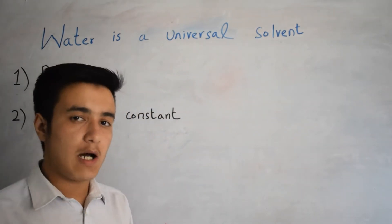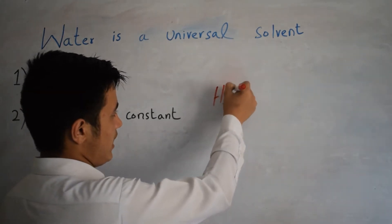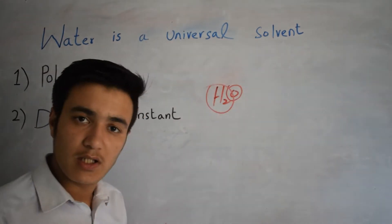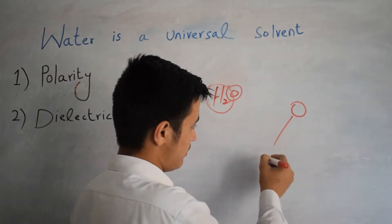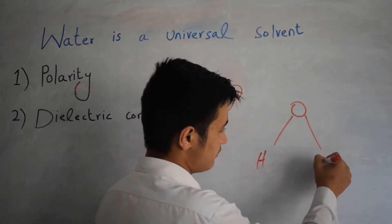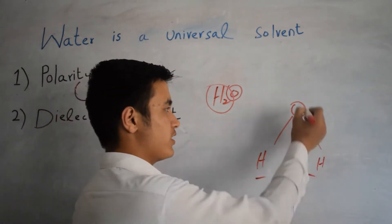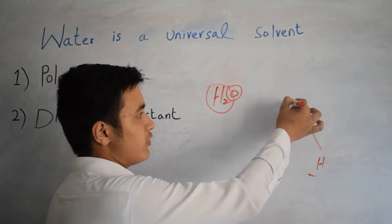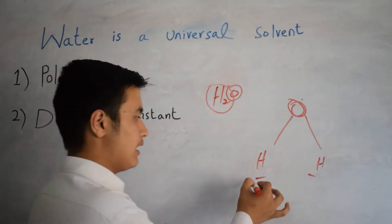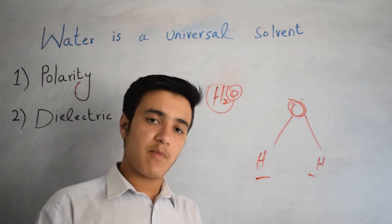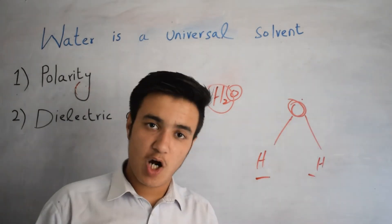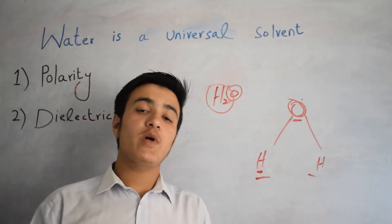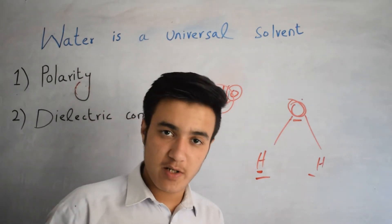Due to these two reasons we say that water is a universal solvent. The first is polarity. Going toward polarity, let's look at the structure of water. The formula for water is H₂O — one oxygen and two hydrogens are present. The electronegativity of oxygen is higher than hydrogen. Electronegativity is basically the property of an element which attracts the shared pair of electrons. There is a covalent bond between hydrogen and oxygen, where sharing of electron pairs occurs.